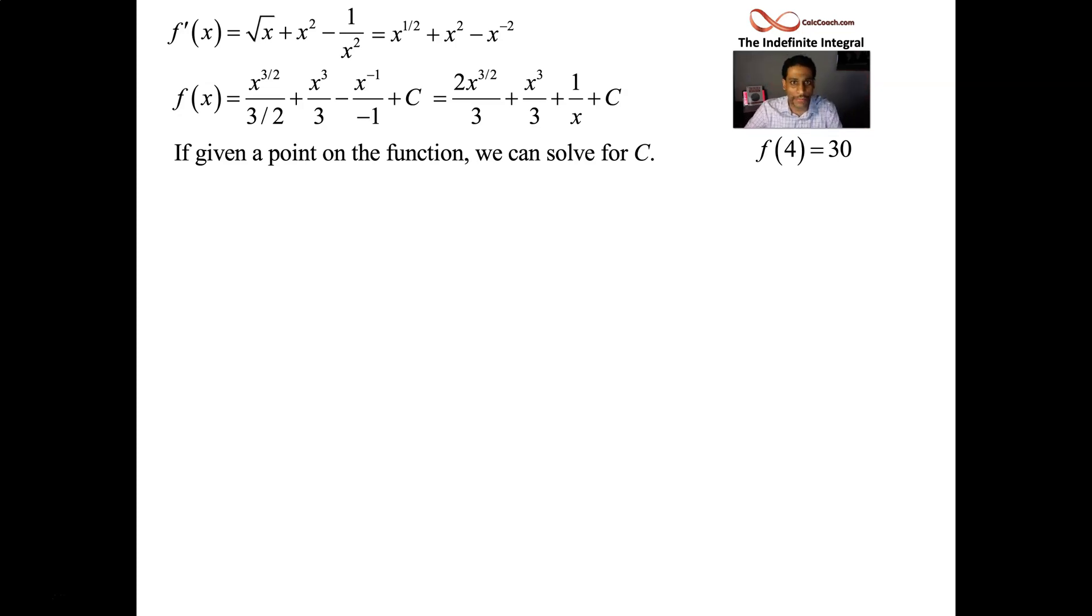We want the one from this family that basically will go through that point. So we plug it in. x equals 4. Every place we see an x, we put a 4. And we set that equal to 30 because when we plug in 4, we should get a 30.